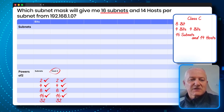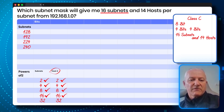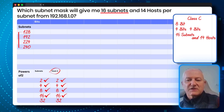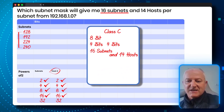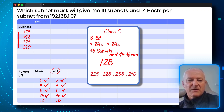What subnet mask does that give us? Reading from the chart: 128, 192, 224, 240 — that's four bits down. We've stolen four bits, so the mask is slash 28, or written out in full: 255.255.255.240. And that's it.